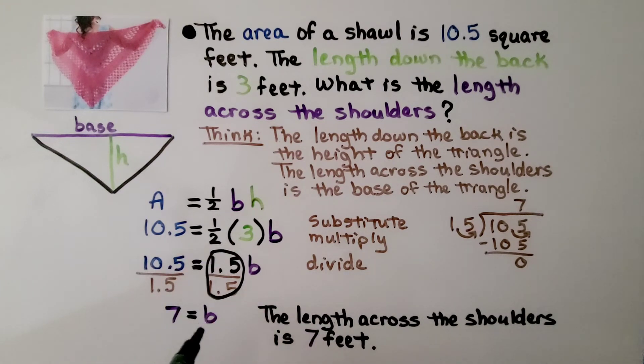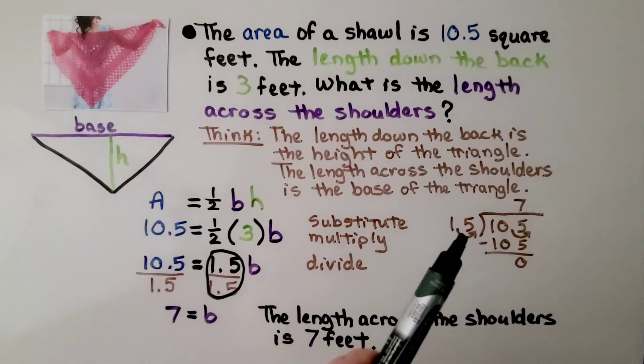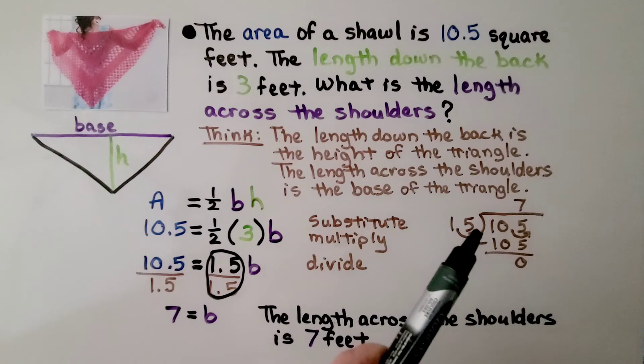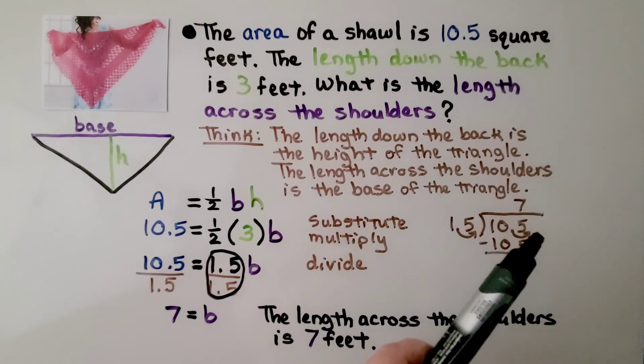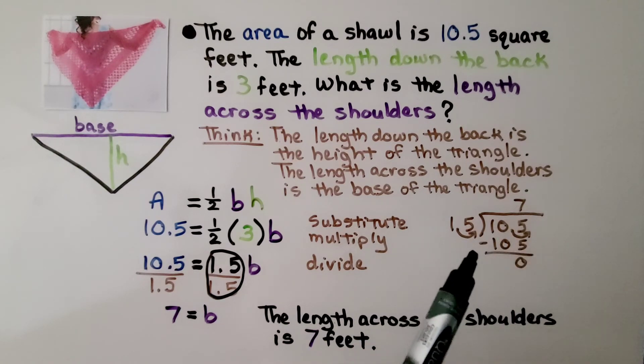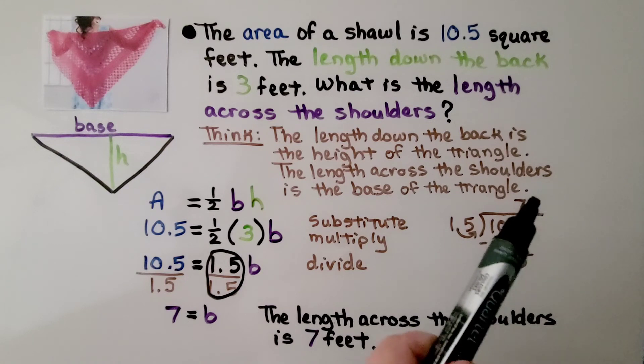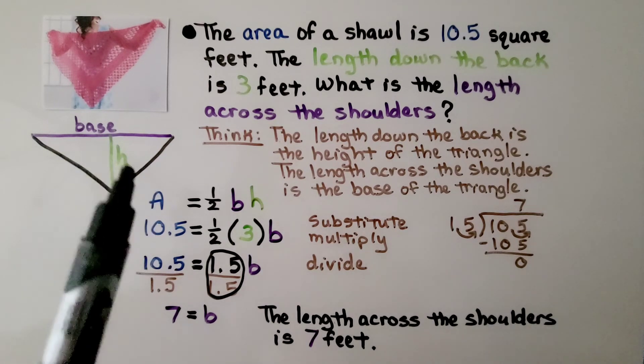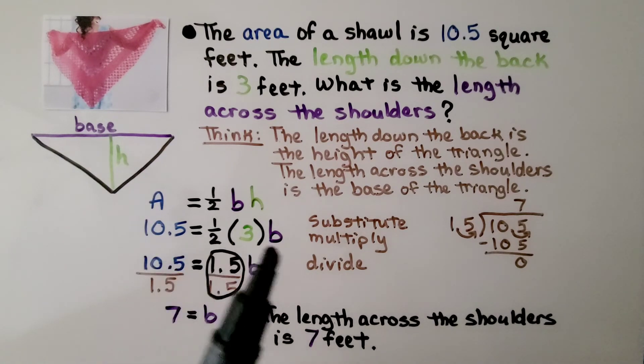And if we do 10.5 divided by 1.5, we move the decimal point to the right side of the 5. That means we move this decimal point. And then we do 15 can fit into 105 seven times. We know it's 7. The length across the shoulders is 7 feet. The problem doesn't have to say base and height.